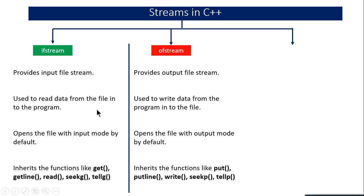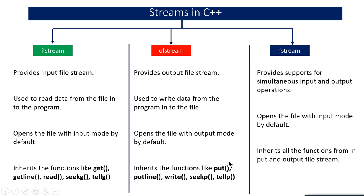The next stream is ofstream. Using ifstream you can input data, whereas using ofstream you can output data into a file. ofstream is used to write data in files; it opens the file in output mode and includes functions like put, putline, write, seekp, and tellp. The next is fstream, which is capable of reading as well as writing data simultaneously in a file. By default it opens the file in input mode, but you can change it as per your requirement.